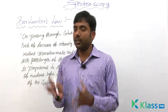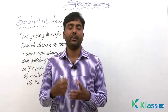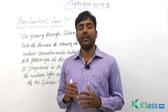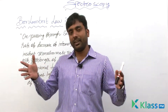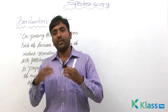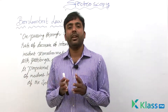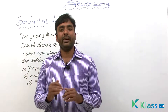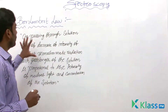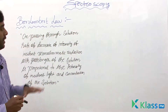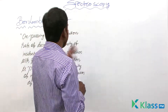As concentration increases, absorption also increases; if concentration decreases, absorption also decreases. As path length increases, the intensity decreases more; if path length decreases, the intensity decrease will be less. This is the Beer-Lambert's Law. Now we will see the combined mathematical equation for Beer-Lambert's Law.